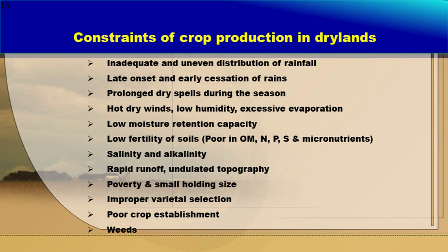Constraints of crop production in dry lands include inadequate and uneven distribution of rainfall — the top reason for low productivity. We are not sure when rain will come and when it will end. Late onset and early cessation of rain can happen. A prolonged dry spell during the season is a common cause of concern. Hot dry winds, low humidity, and excessive evaporation — particularly during summer months — can exceed the uptake of water by the crop.